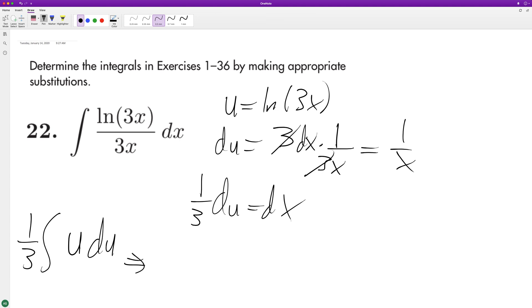So when we integrate this, we get 1 3rd times u raised to the second over 2 plus c, which gives us u to the second over 6 plus c.